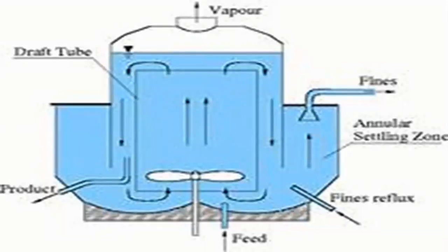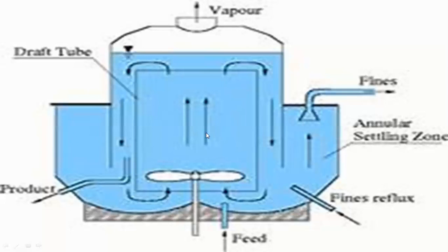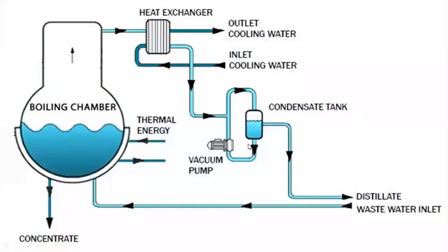In the centrifuge type crystallizer, the draft tube allows vapor to exit from the top while the feed enters from the bottom. There is significant churning, and an annular settling zone allows vapors to escape while solids settle. Fines reflux are re-injected into the system, and the product is taken from the bottom. This annular settling zone arrangement is characteristic of this type.